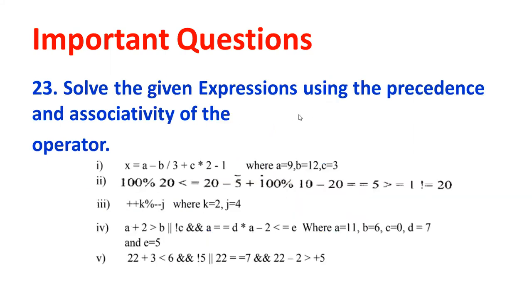Solve the given expression using the precedence and associativity of the operator. You need to know how the operator works. Then only you can identify. For example, as the equal to subtraction, multiplication. The values of variables are already given. A is equal to 9. B is equal to 12. C is equal to 3. Accordingly, what do I evaluate?